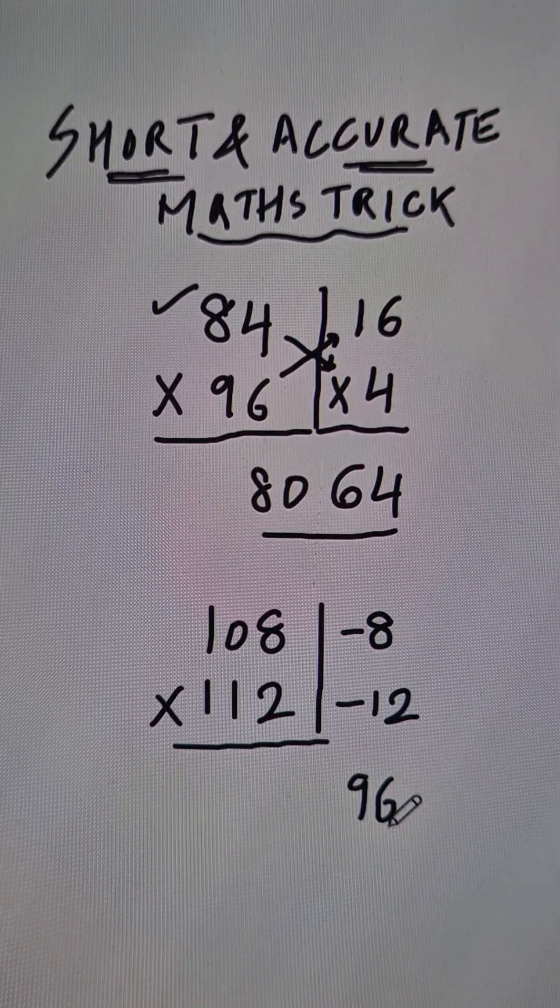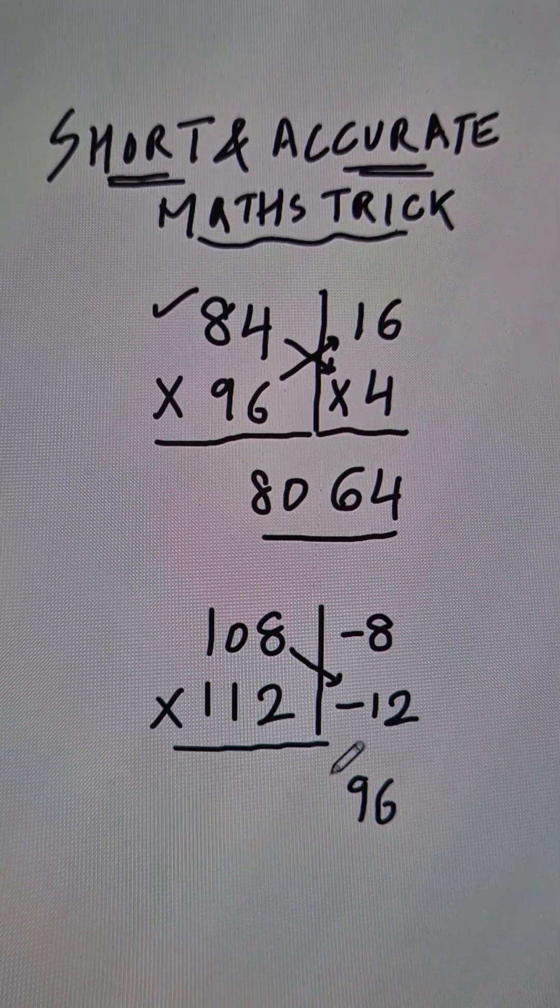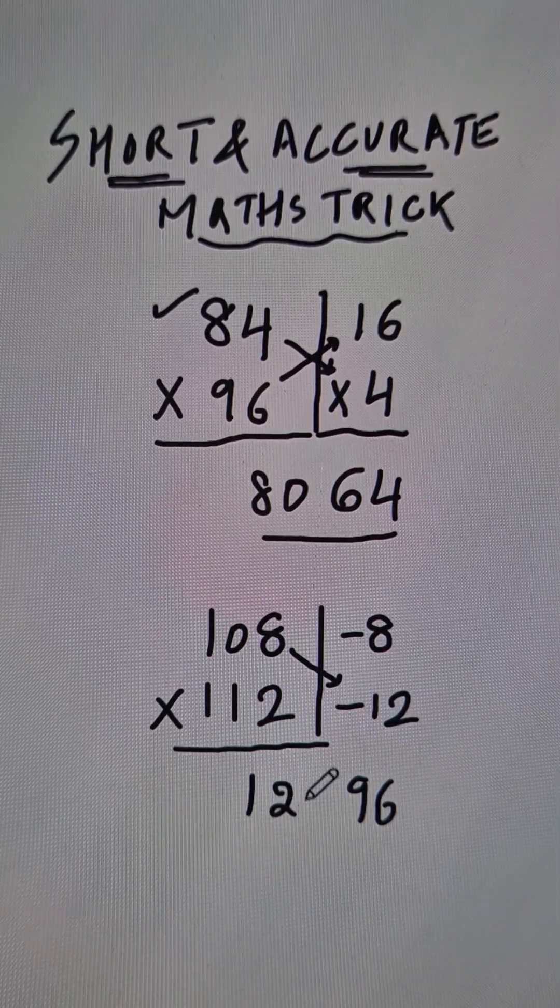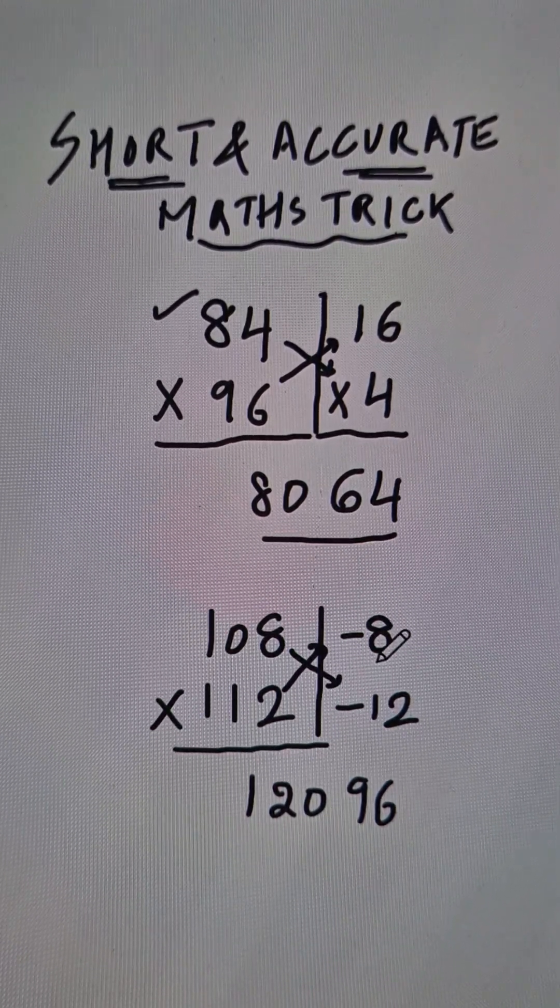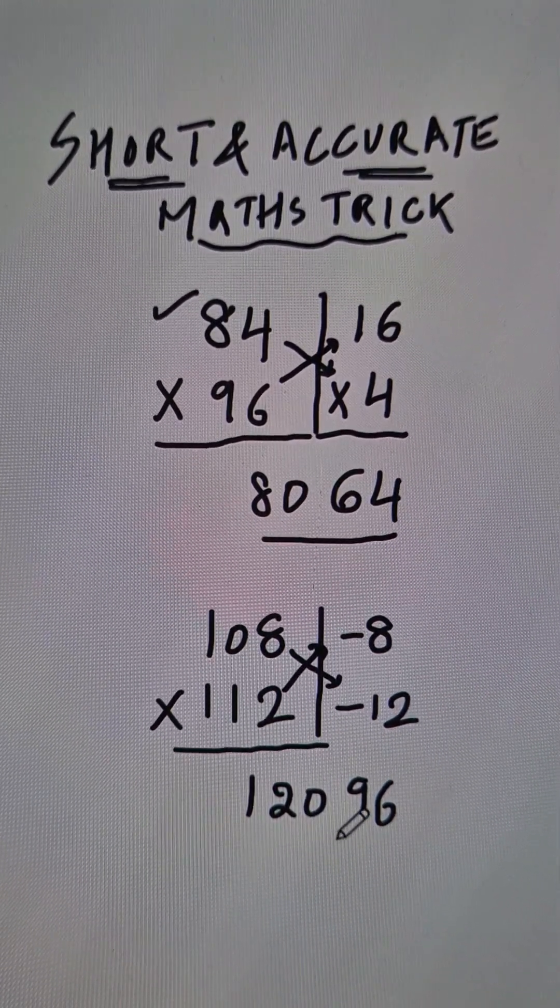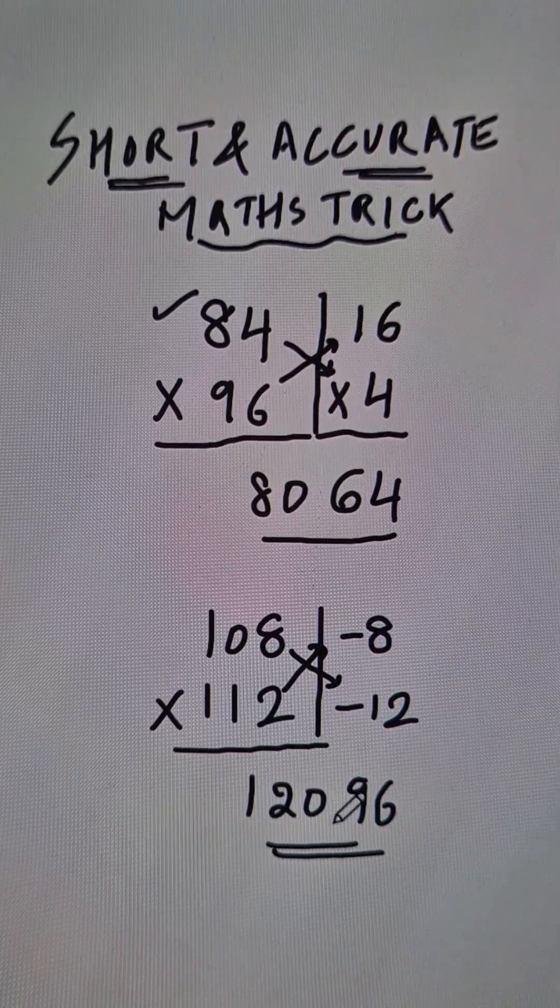And now when you subtract like this: 108 minus minus 12 becomes 120. You can subtract like this also: 112 minus minus 8, that will also give you 120, and the answer for the question is 12096.